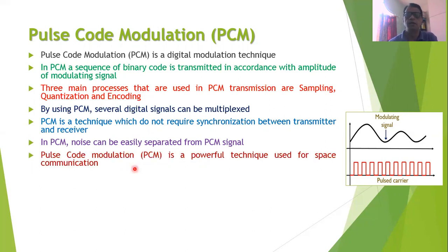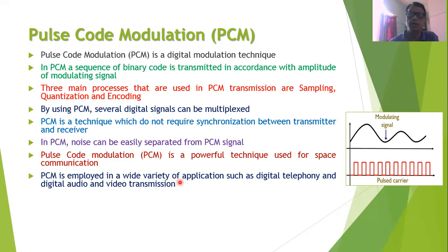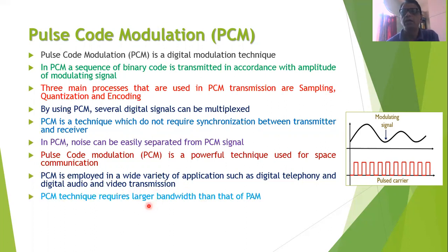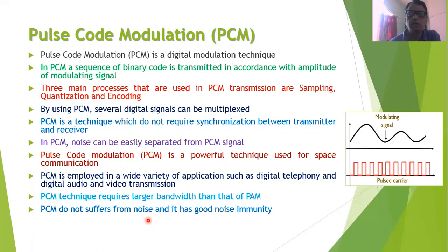PCM is powerful enough for space communication — transmitting signals from a space satellite to earth over very long distances. PCM is also used in a wide variety of applications such as digital telephony, digital audio, and digital video transmission. One drawback is that PCM requires larger bandwidth than analog techniques such as pulse amplitude modulation. However, the biggest advantage of PCM is that the binary code transmitted gives it good noise immunity.